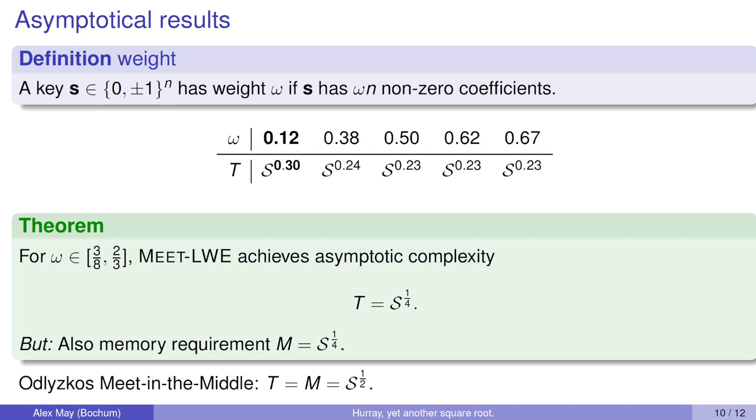This gives our theorem. For these large omegas, our meet-LWE achieves asymptotic complexity which is the fourth root of the search space. It also has memory requirement fourth root of the search space. If you compare to the formerly best known combinatorial algorithm, which was Odlyzko's meet-in-the-middle, we had the square root of the search space. Our new result has another square root. We get the fourth root of the search space, which is already quite impressive. You will see that this also translates to significant speedups in practice.